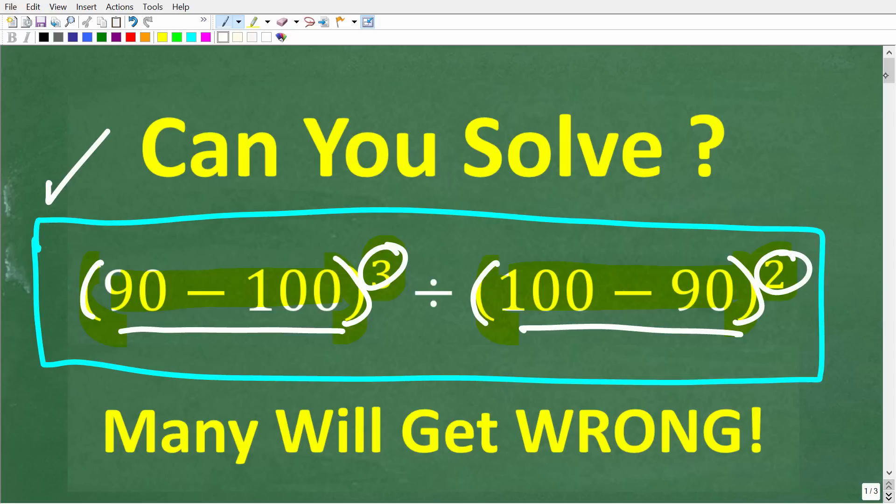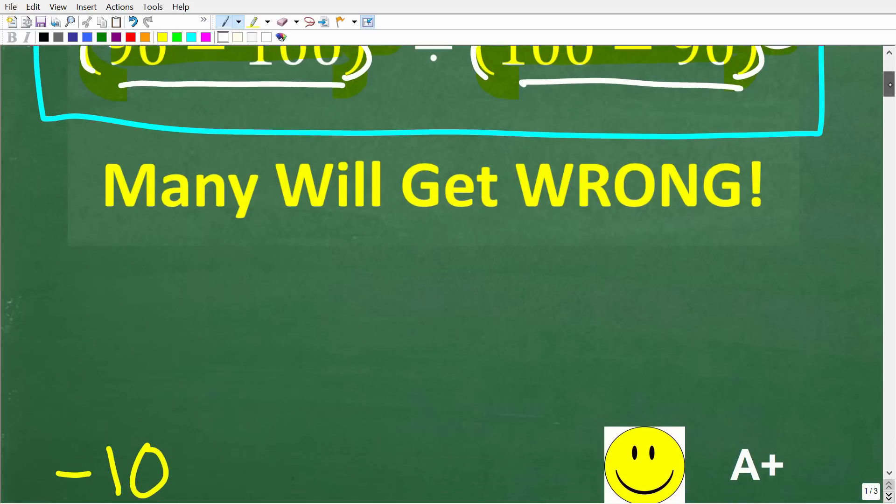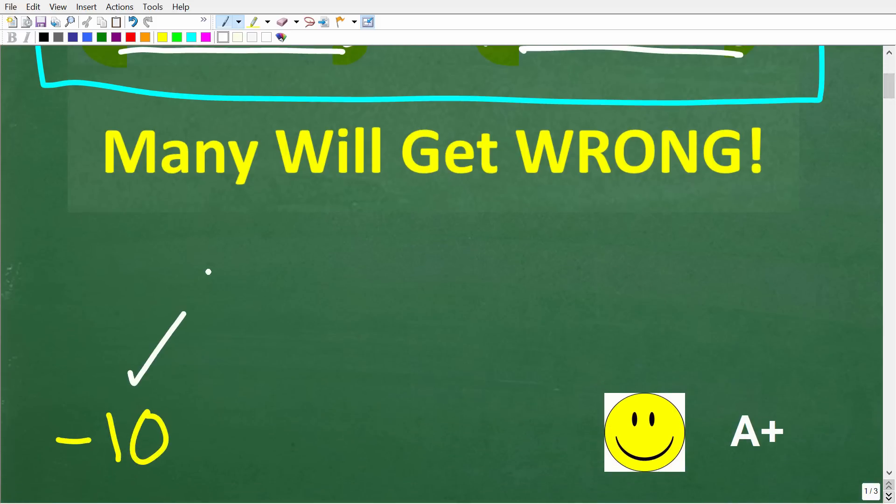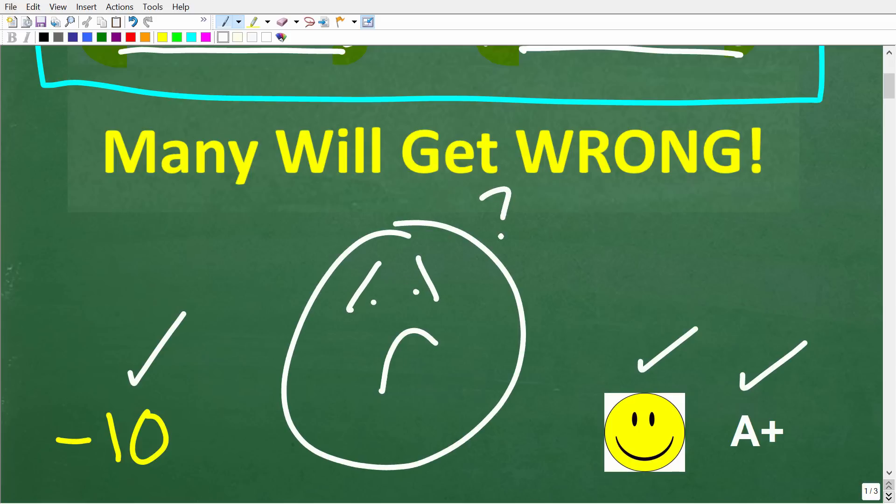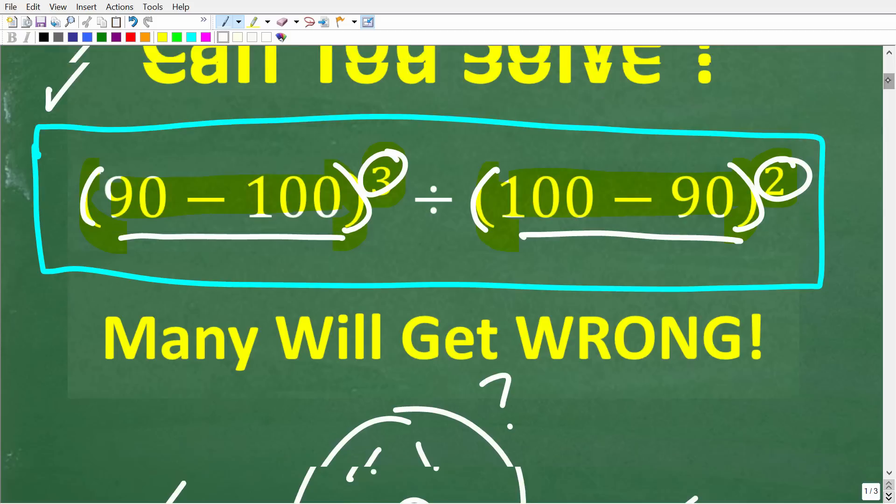All right, so let's take a look at the answer. The correct solution here is negative 10. Now, if you got this right, well, you definitely get a happy face and an A plus. If you're like, I missed you too, man, I knew this stuff way back in the good old days. You should have seen me. I used to get all A's in math.